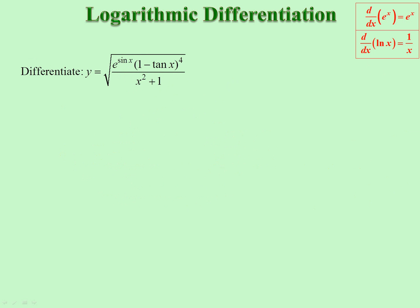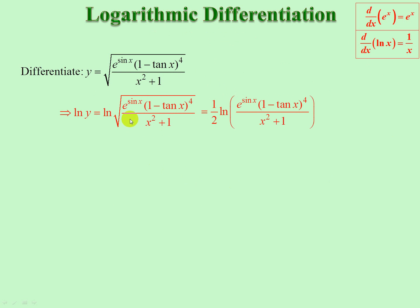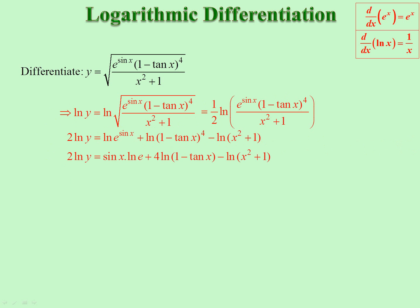Here's the complex example I mentioned earlier. If we take ln of both sides, this expression is really all of that to the half, so I've brought the half to the front. Now there are 1, 2, 3 factors — 2 multiplying, 1 dividing — so I can divide it up: ln of that plus ln of that minus ln of that. I've multiplied the half through to the other side. Sine x can come to the front as a power; 4 can come to the front.